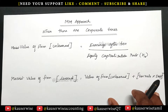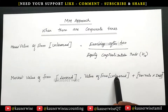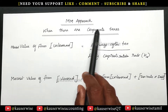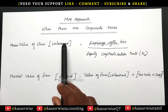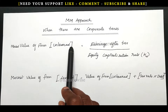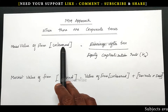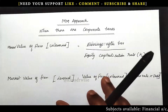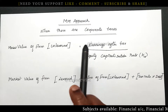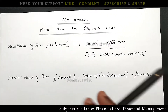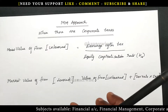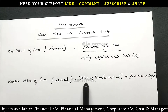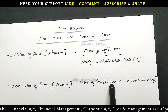Before we see the numerical problem, let us try to understand the formula, then we can go for the numerical problem. Under MM approach when there are corporate taxes, the firm is classified into two categories: the first one is unlevered and the next one is levered. Unlevered means there is no debt — the entire capital structure is full of equity. Levered means both equity and debt will be there.